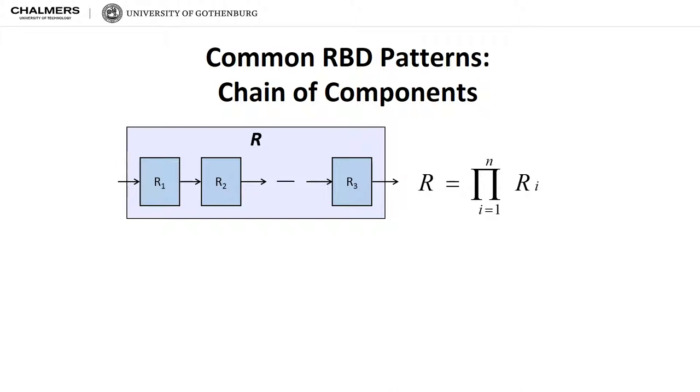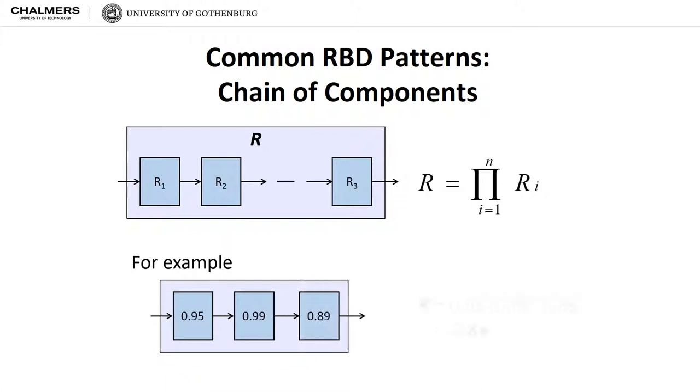Next, we look at some common patterns in reliability block diagrams. The first pattern we look at is that of a chain of components. It is composed of blocks that are put in sequence. It means that a computation must pass through all the blocks. The overall reliability of such a pipeline or chain can be calculated as the probability of all components executing successfully, hence the product of the individual reliabilities. You can look at the example.